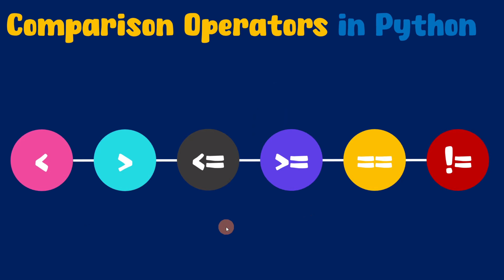These are the various comparison operators that we have in Python. Now you might have studied about comparison operators in your mathematics — they are exactly the same. Remember, all these comparison operators are binary operators, hence they require two operands in order to perform comparison operation. The result of a comparison operator is always a boolean value, so it can either be true or false. Now let's understand each of these comparison operators in Python.